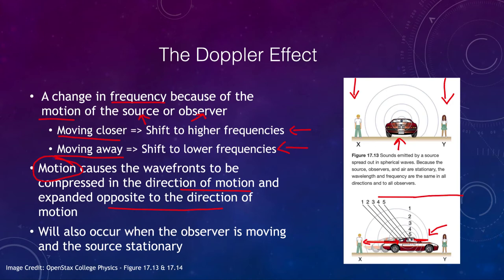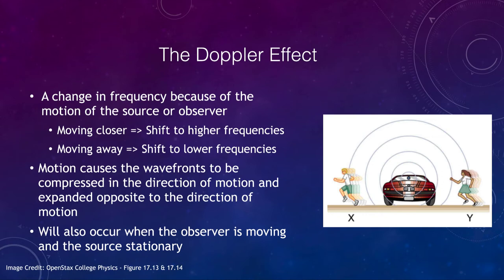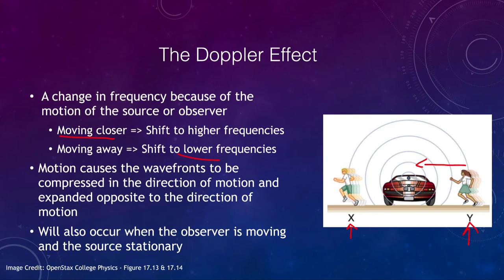This also occurs when we look at the observer moving instead. If people are running, the lady running towards the vehicle is going to note the same thing — she is getting closer to the source, so that's the equivalent of moving closer, and person Y will note a higher frequency. Whereas person X will note a lower frequency because they are moving away from the sound. The amount of shift depends on the velocity, and it is exactly the same regardless of whether it is the vehicle or the observer doing the moving.